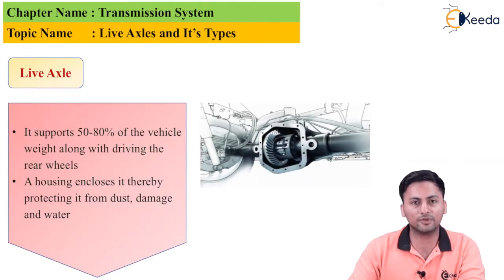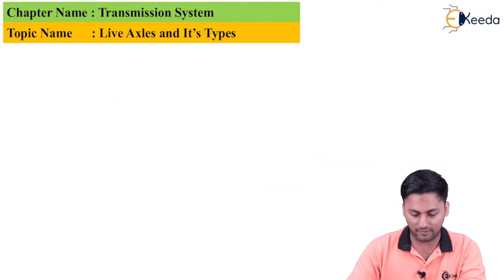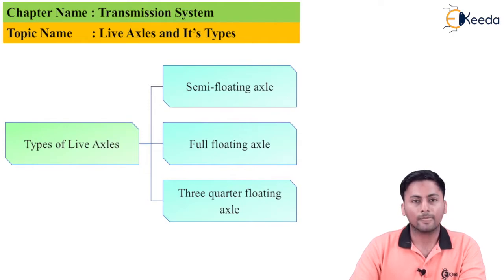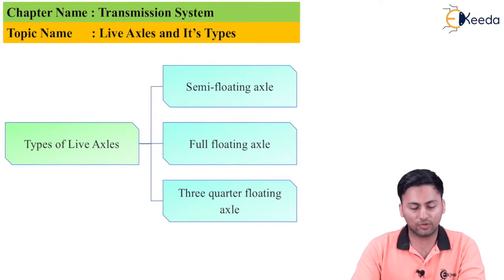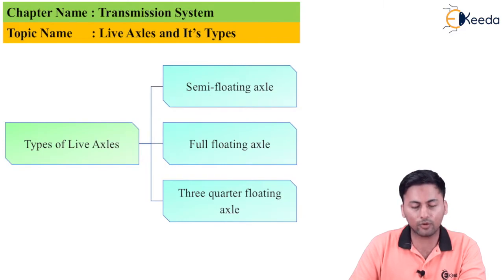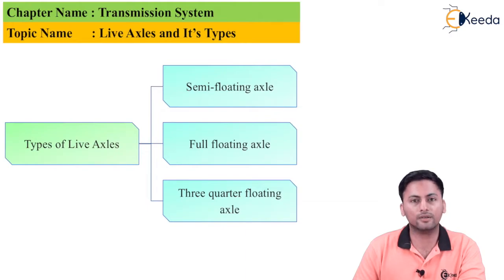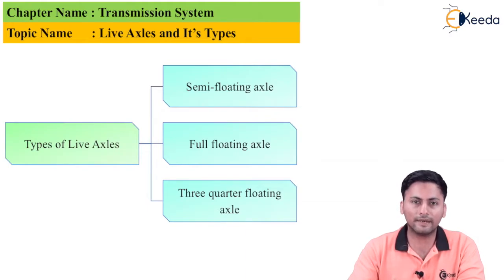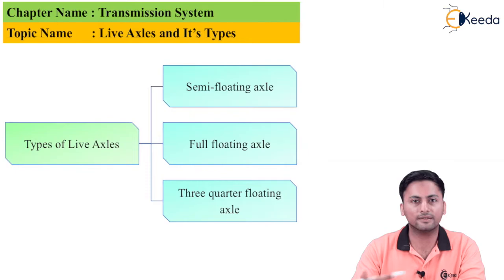There are three important types of live axles: the first is the semi-floating axle, the second is the full floating axle, and the third is the three-quarter floating axle. We will now go through each one step by step.